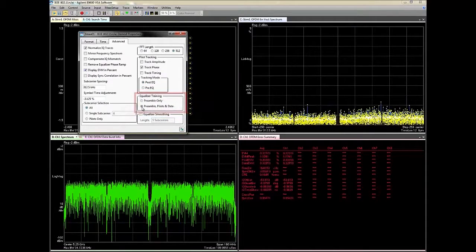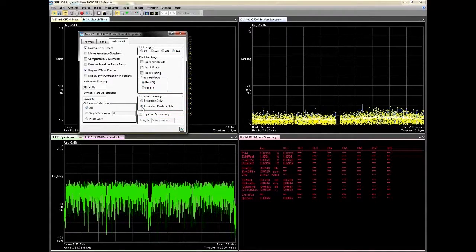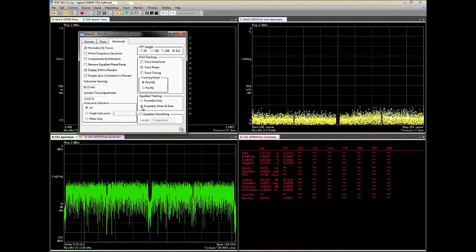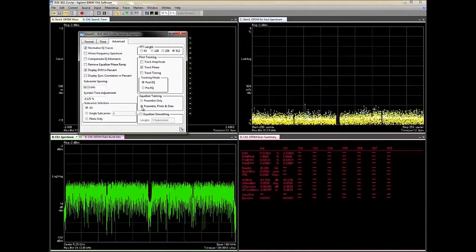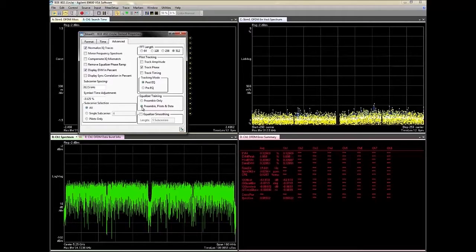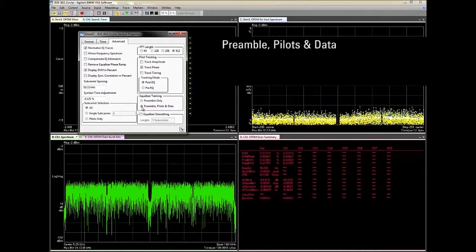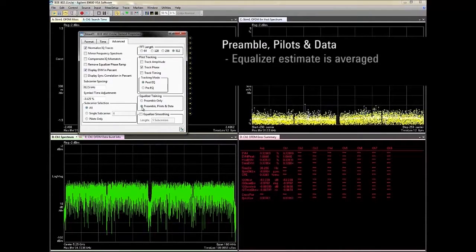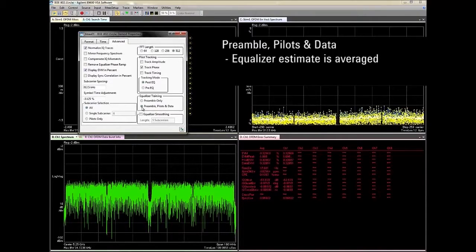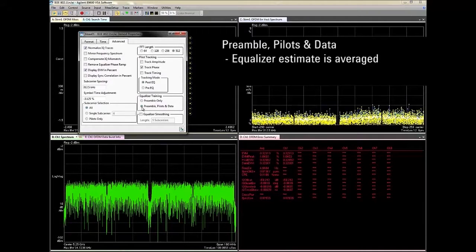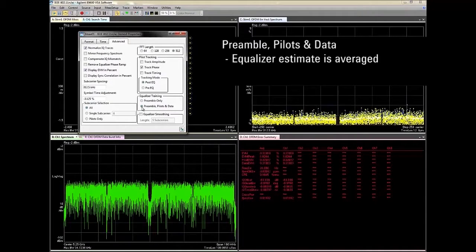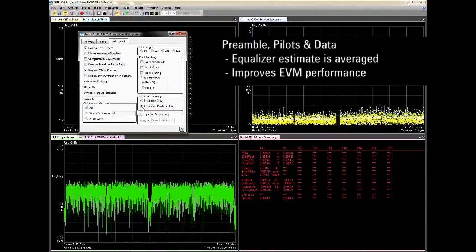We see an improvement because when the equalizer uses the preamble only, the equalizer estimate contains noise from the preamble which adds to the measured EVM. With the equalizer setting of preamble pilots and data, the equalizer estimate is averaged over all of the symbols in the measurement which produces a more accurate or less noisy channel and improves the EVM performance.